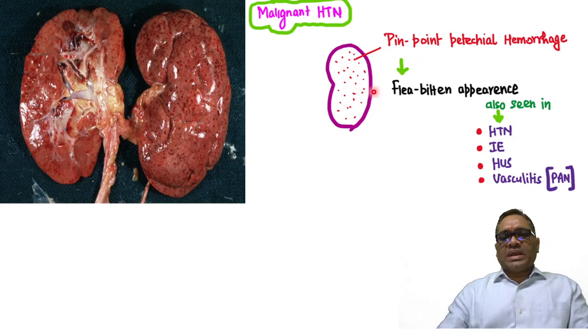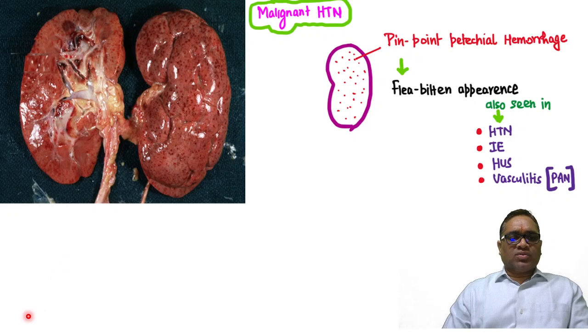When you see pinpoint petechial hemorrhages, these are called flea-bitten appearance, which apart from malignant hypertension can also be seen in infective endocarditis, hemolytic uremic syndrome, and vasculitis like polyarteritis nodosa.